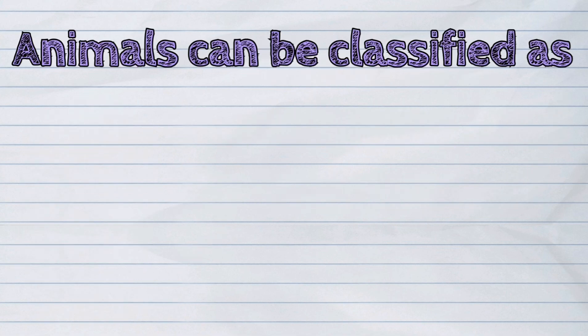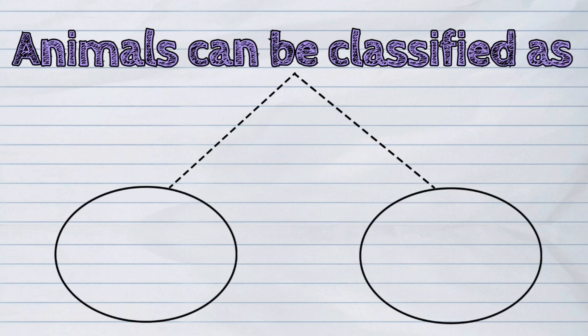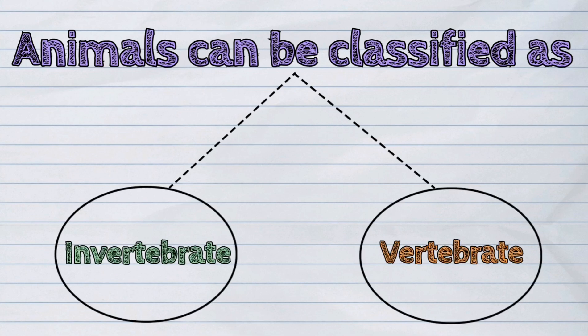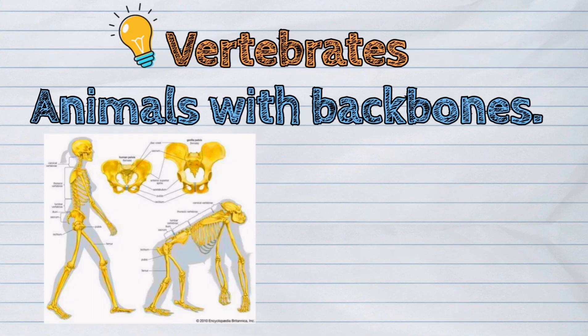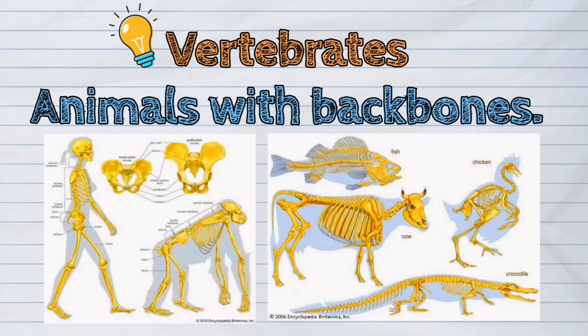Animals can be classified as invertebrate or vertebrate. Today, we will discuss the vertebrates. They are the animals with backbones.